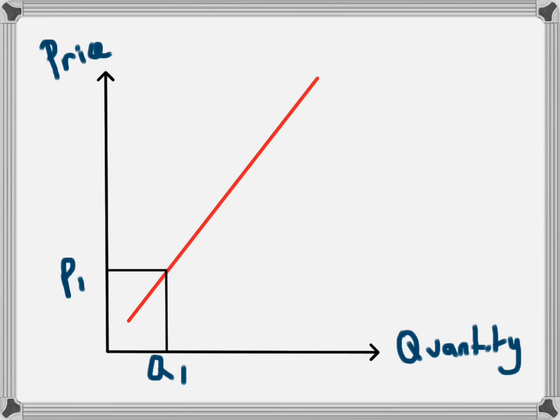If, however, they were able to charge a higher price for the product, for example at P2, then they would be more willing to supply more of that product.